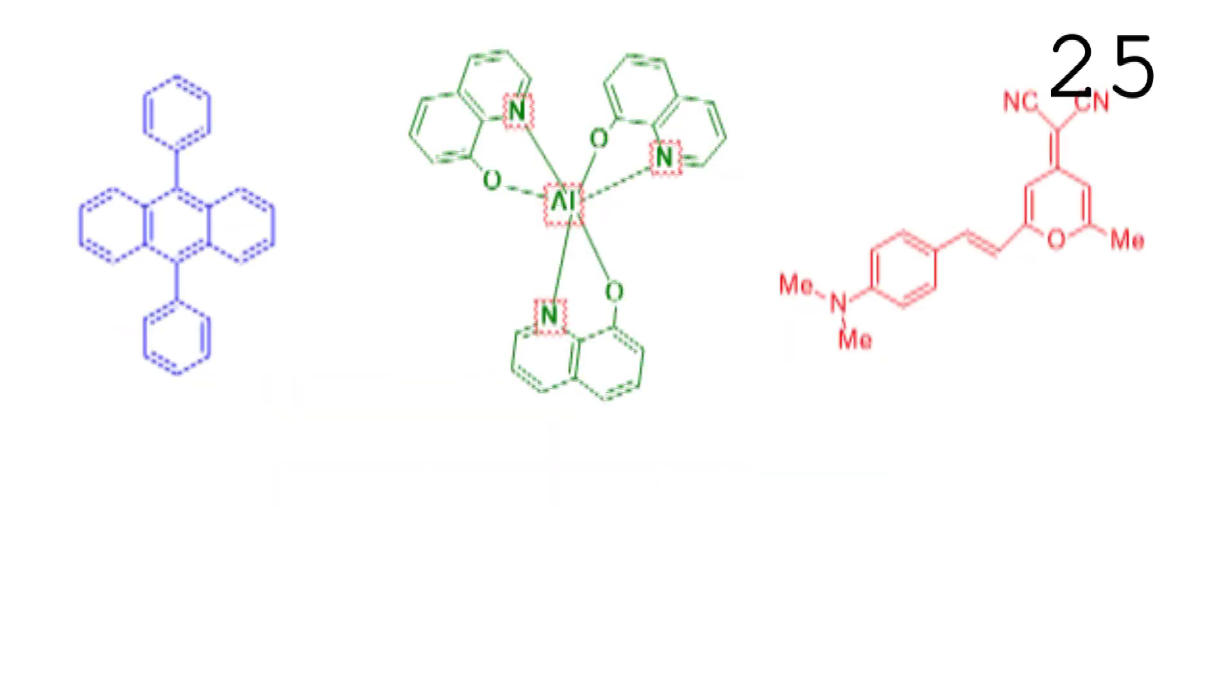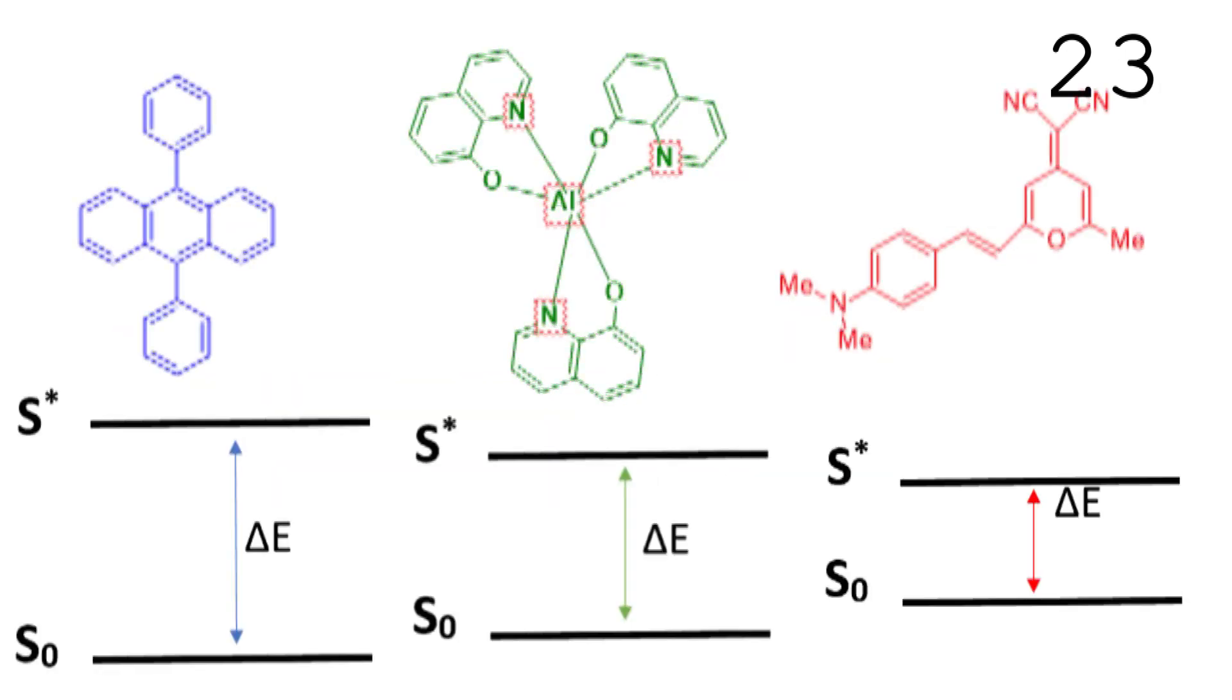With the correct design of organic molecules, we can modulate the difference in energy between the excited state and the ground state, so that we can have emission in the blue, green, and red region.